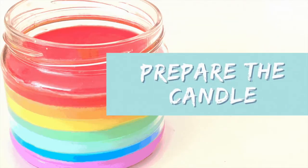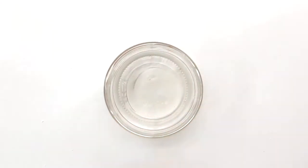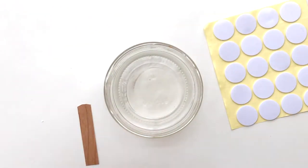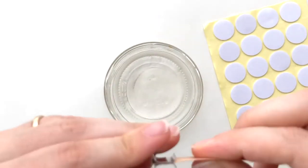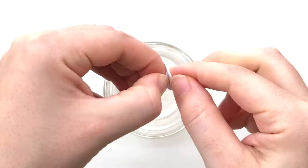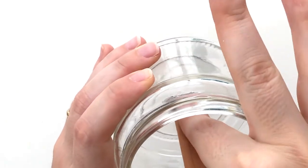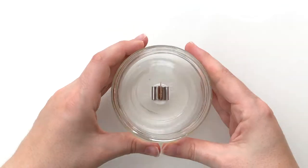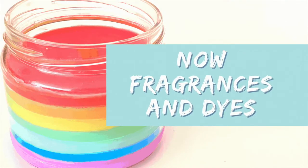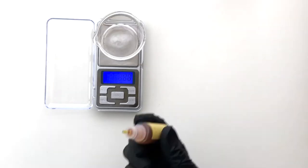We start by preparing the candle. Let's insert the wooden wick in the wick holder and attach it to the container with the sticker. Once ready, we set it aside. Before handling the wax, we prepare fragrances and dyes.